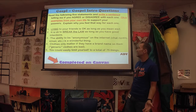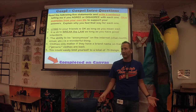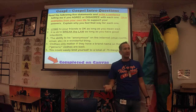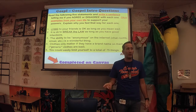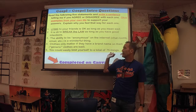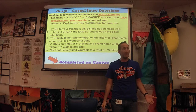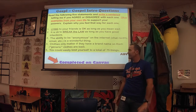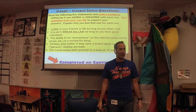Three: 'The ability to be anonymous on the internet is a wonderful thing.' Agree. 'What do you mean by wonderful?' Like, it's a good thing. It's literally written in front of you — it's a good thing. And then disagree. Four: 'Clothes only matter if they have a brand name on them.' Agree? Disagree. 'Not only matter — they don't matter.' Those are two different things. And then five: 'You could easily limit yourself to a total of 75 things.' Agree? 'No, I couldn't.' Disagree. Interesting.